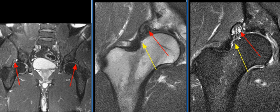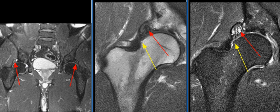The right hip shows very attenuated labral tissue along with capsular thickening and edema. Edema is also seen within the os and the acetabulum at their articulation. Cystic changes are seen in the lateral acetabular rim along with chondral degeneration in the supralateral acetabular roof.